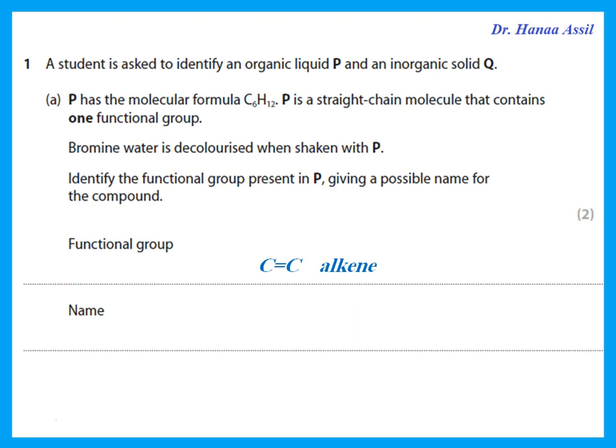What is the name? He says give a possible name for this compound. He tells me it's C6H12 and it is an alkene — an alkene with six carbons. That is hexene.